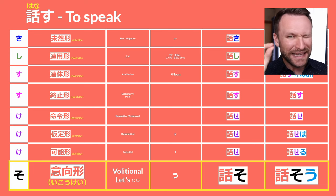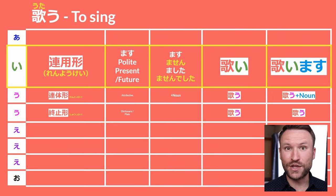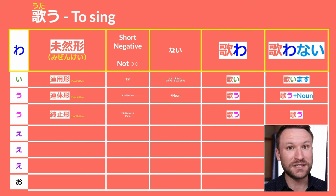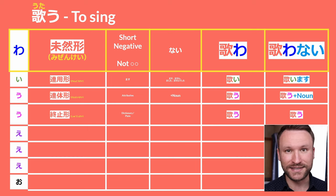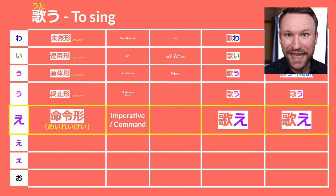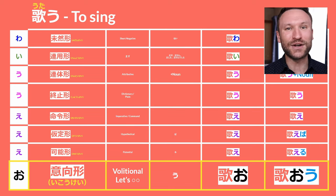The only godan verbs that are a little bit different are verbs that end in U. Let's take utau, meaning 'to sing.' Shushikei and rentaikei are, of course, utau. Moving up to renyoukei: utaimasu, utaimasen, utaimashita, utaimasen deshita — same so far. The difference is when we move up to the A column. For verbs ending in U, we don't change to A. It doesn't become uta-a — it becomes uta-wa. We use the character wa. So: utawanai. Every other conjugation is the same: utae (meireikei), utaeba (kateikei), utaeru (kanoukei), utaou (ikoukei).